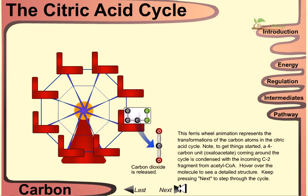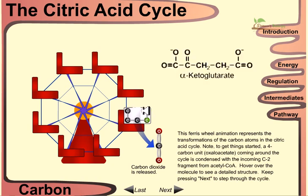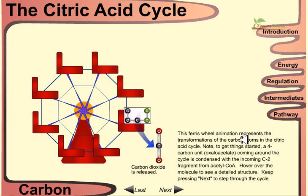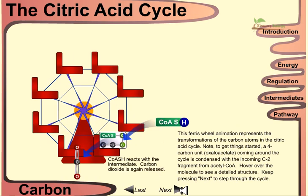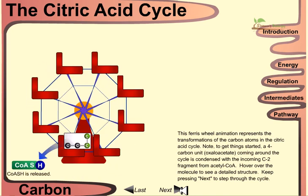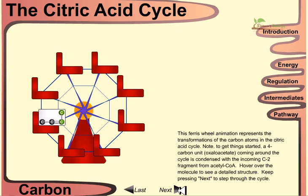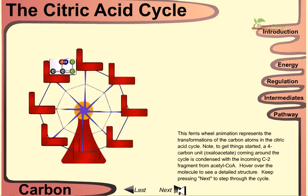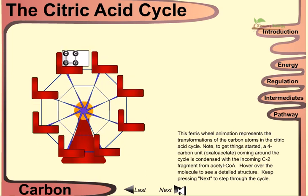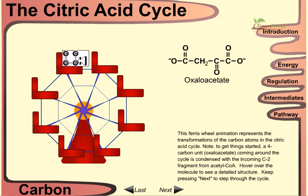Carbon dioxide is generated from the cycle. We start with a C4 and C2 molecule — two carbon molecules are released in successive steps. Each step generates products, and finally a four-carbon molecule, oxaloacetate, is regenerated.